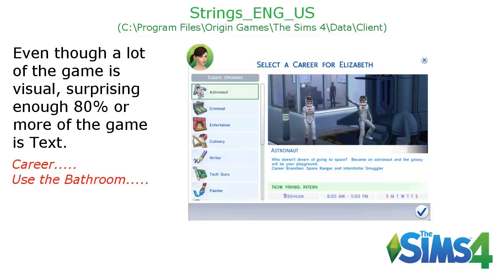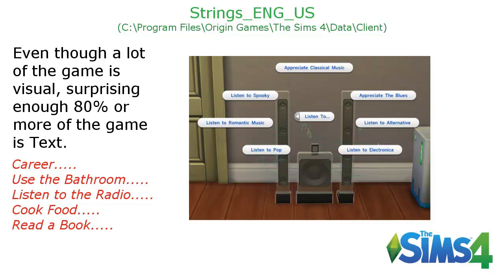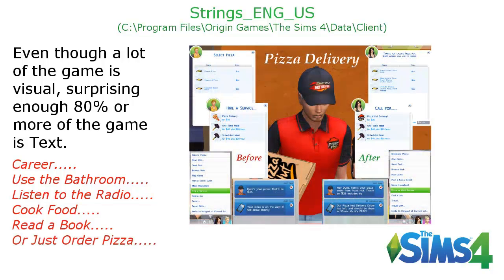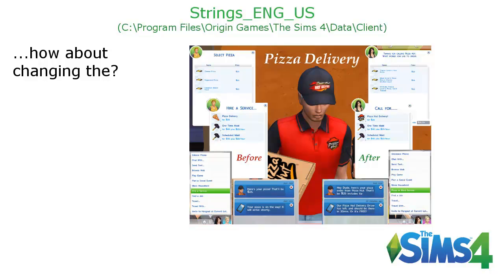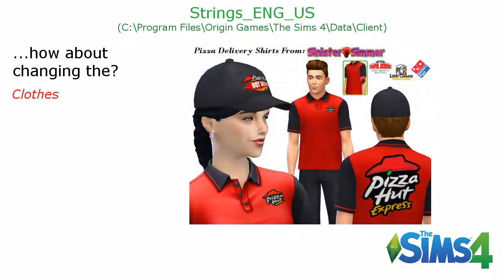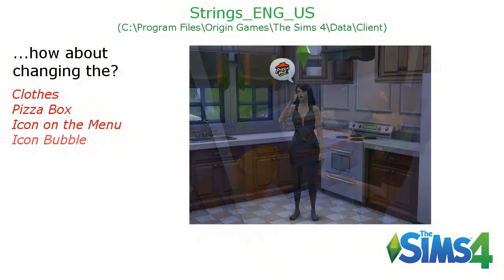Now since text takes up a mass majority of the game, it kind of makes sense for us to actually change and edit this text so that the game gives us more of a realistic feel. We see text when we're trying to get a job, to use the bathroom, to listen to the radio, to cook food, to read a book, or even to order a pizza. Everything we see is text, and we can change this text all throughout the game using just one simple little file.